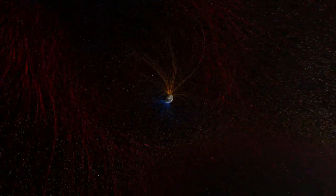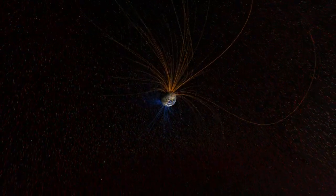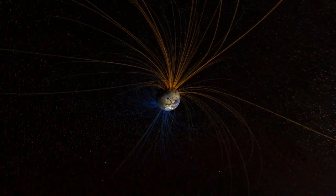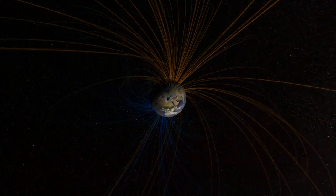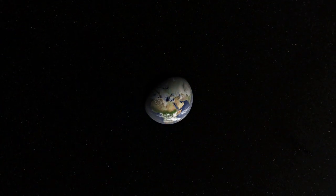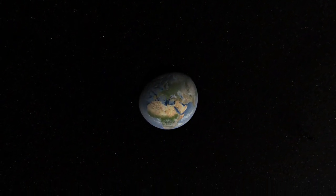In fact, that's just our first line of defense. Much of the solar energy that gets through is reflected back to space by clouds, ice, and snow.